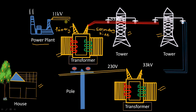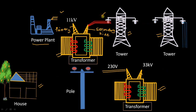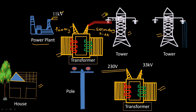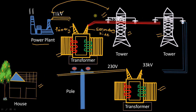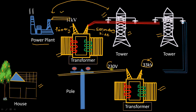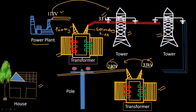The primary side is 11 kV and the secondary side is 33 kV. These are the transmission lines. Coming to the second transformer: the primary side is 33 kV and the secondary side is 230 volts only. This transformer transfers power from primary to secondary with a change in voltage — voltage level changes from 33 kV to 230 volts.